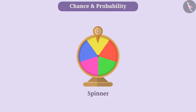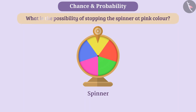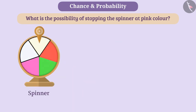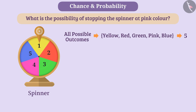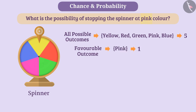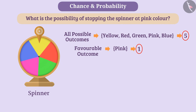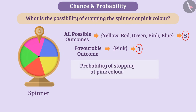Now look at this spinner. It has yellow, red, green, pink, and blue colors with equal areas of paths. Can you tell what would be the possibility of stopping the spinner at pink color when it is spun? Here, the area of all colors is equal, so the possibility of results will be equal. In this experiment, there are total 5 possible outcomes, but out of these 5, the favorable outcome is only one — pink color. On spinning the spinner, the possibility of stopping at pink color is 1 out of 5. So the probability of stopping at pink color is 1 by 5.